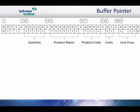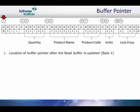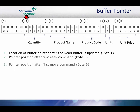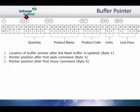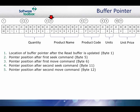Here is an explanation of how the buffer pointer works in a read buffer. Point 1 represents the location of the buffer pointer after the read buffer is updated. If no buffer commands are used, it will stay at byte 1. Point 2 represents the buffer pointer position after the first seek command. The pointer is now at byte 5 of the buffer. Point 3 represents the pointer position after the first move command. The pointer is now at byte 6, which is the first byte of the quantity. Point 4 represents the pointer position after the second seek command. The pointer is now at byte 11 of the buffer. Point 5 represents the pointer position after the second move command. The pointer is now at byte 12 of the buffer, which is the first byte of the product name.